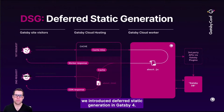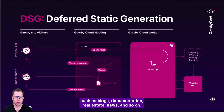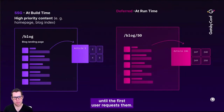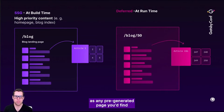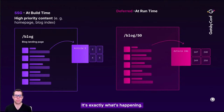To provide more control over where and when page building occurs, we introduced deferred static generation in Gatsby 4. This is useful in scenarios where your sites have long-tail content, such as blogs, documentation, real estate, news, and so on. Deferred pages are not built until the first user requests them. After that, those pages are now the same as any pre-generated page you'd find in classic static site generators. This is why we called it deferred static generation — it's exactly what's happening.